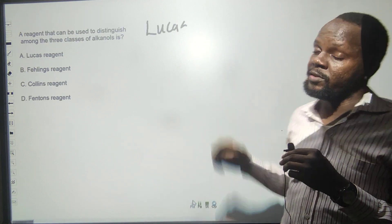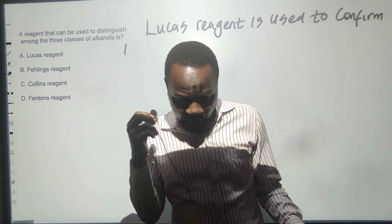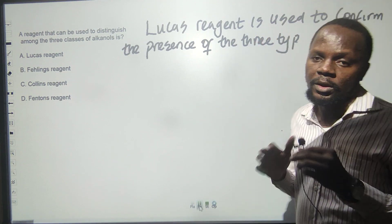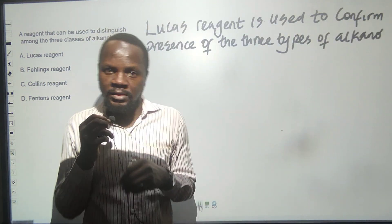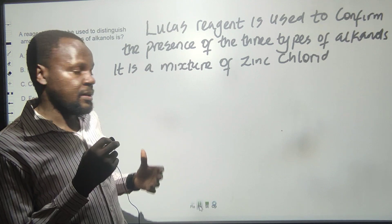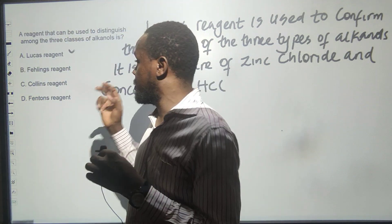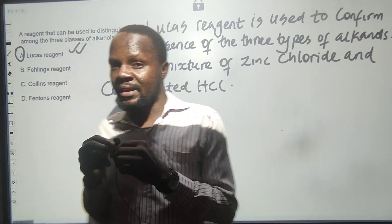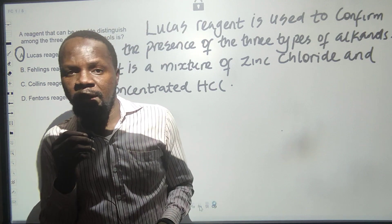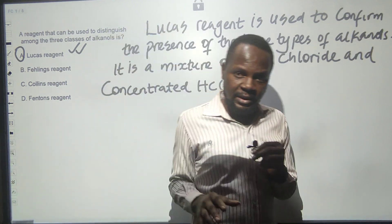Lucas reagent is basically a mixture of hydrochloric acid concentrated with zinc chloride. It is used to differentiate all three types of alcohols - it can differentiate primary from secondary and secondary from tertiary. Fehling's solution cannot do that; it's used to test for non-reducing sugar. Collins reagent is used in testing for aldehydes. The correct answer is Lucas reagent.